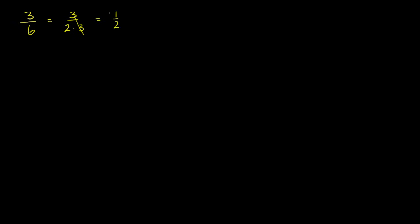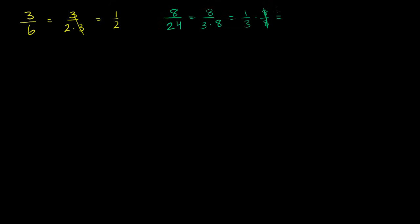Just to hit the point home, if we had 8 over 24, we know that this is the same thing as 8 over 3 times 8, or this is the same thing as 1 over 3 times 8/8. The 8's cancel out, and we get this in lowest terms as 1/3.